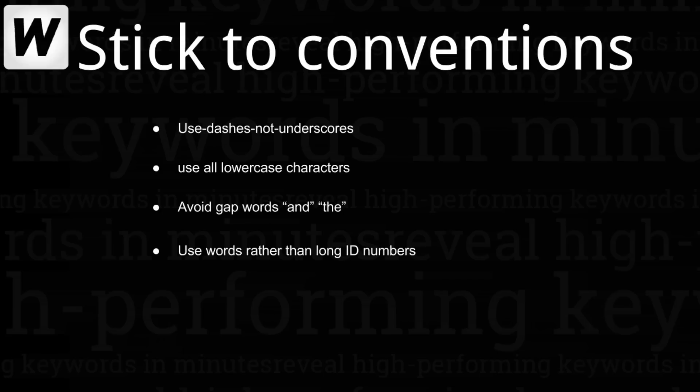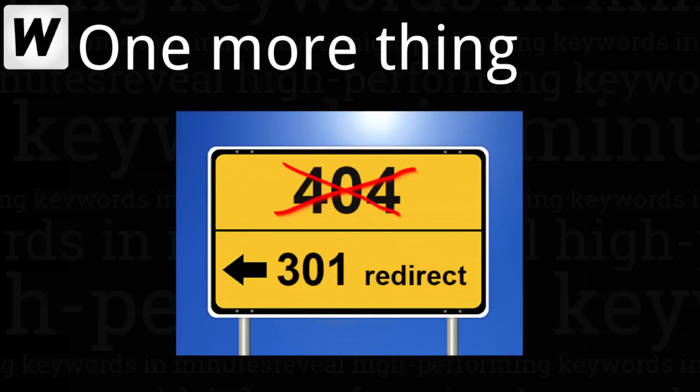Sticking to conventions is pretty straightforward and a lot of CMSs will use these by default. You'll want to use dashes, not underscores, stick to lowercase characters, edit out those gap words, and make sure you're using words rather than long complicated ID numbers. In an ideal world, we want our URLs to be sustainable and last a long time.